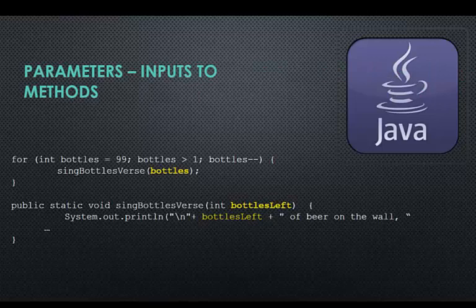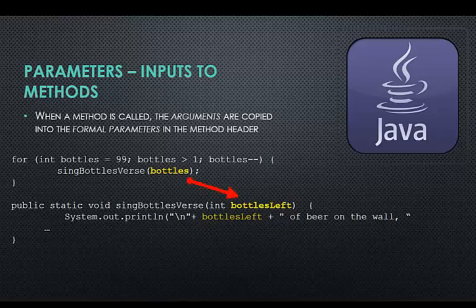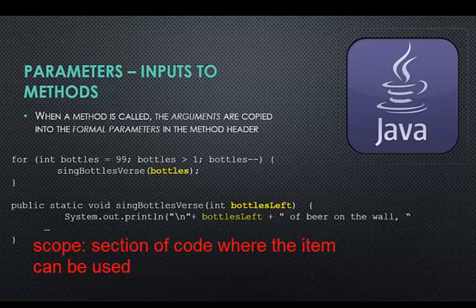Parameters. These are inputs to the method. When a method is called, the arguments are copied into the formal parameters in the method header. Bottles is the argument. Bottles left is the formal parameter for method Sing Bottles Verse. The name we are using inside the method is different from the named variable in main. It is an independent copy of the original bottles from main. It can only be used inside Sing Bottles Verse. Like variables, the area of code that parameters can be used in is called its scope, and its boundaries are defined by the braces.